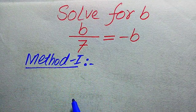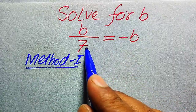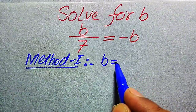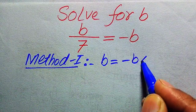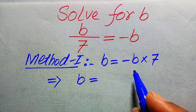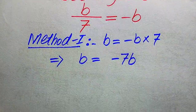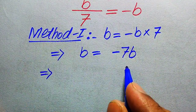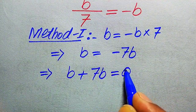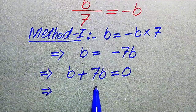If you have any other method in mind, please don't hesitate to write it in the comment section. In the first method, we move the 7 to the right hand side. Since it is dividing on the left hand side, when we move it to the right hand side it multiplies, and it becomes b equals minus b multiplied by 7. This implies b equals minus 7b. In the next step, we move minus 7b from the right hand side to the left hand side, giving us b plus 7b equals 0.